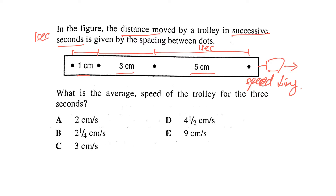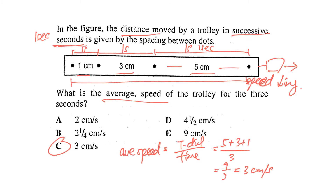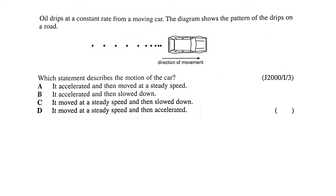What they want you to find is the average speed of the car, which is total distance divided by total time. The total distance is 5 plus 3 plus 1. The time, with one second per interval over three intervals, is 3 seconds. So average speed is 9 over 3, which equals 3 cm per second. The answer is C.